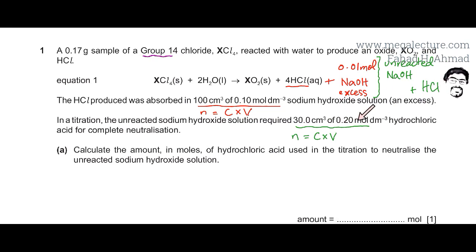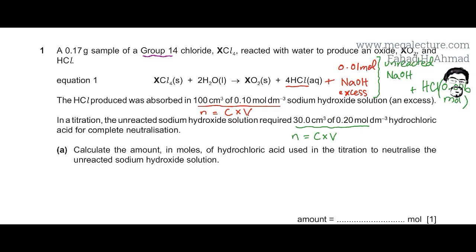Using concentration multiplied by volume: 30 cm³ divided by 1000 gives 0.03 dm³, multiplied by 0.2 mol per dm³, gives 0.006 moles. That is the amount of HCl required to finish off the unreacted NaOH. Now let's work through the complete question step by step.